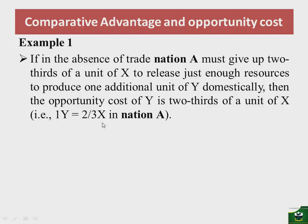It should be emphasized that when measuring the opportunity cost of an item, we always measure it in terms of the units of the other commodity. So if you write the opportunity cost of Y equals 2/3, that is wrong — it should be 2/3 X. Always attach the unit of the foregone commodity to your opportunity cost measure.